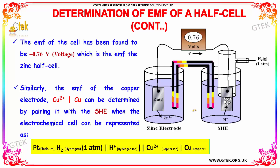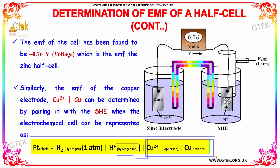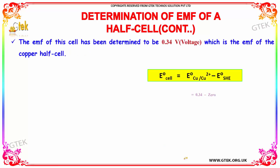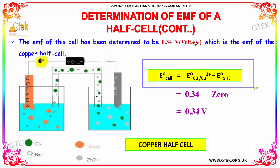Similarly, the EMF of the copper electrode (Cu²⁺ | Cu) can be determined by pairing it with the standard hydrogen electrode. The electrochemical cell is represented with a platinum electrode, hydrogen ions, a salt bridge, and copper. The EMF of this cell is determined to be 0.34 volts, which is the EMF of the copper half cell. So E0 cell equals E0 copper minus E0 SHE, giving 0.34 minus 0, which equals 0.34 volts.